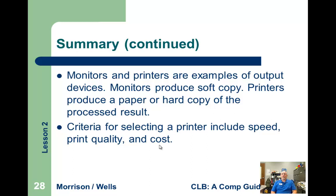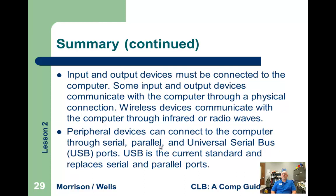Monitors and printers are output devices and the most common type of output. Monitors make the soft copy — what you see on the screen that you can't take around with you. Hard copy you can feel and touch and it's on a piece of paper or other media. The criteria for selecting a printer include speed, print quality, and cost. Input and output devices have to be connected to the computer through a port. Peripheral devices connect through serial, parallel, or USB — universal serial bus — ports. USB is the current standard and has replaced the old serial and parallel ports.